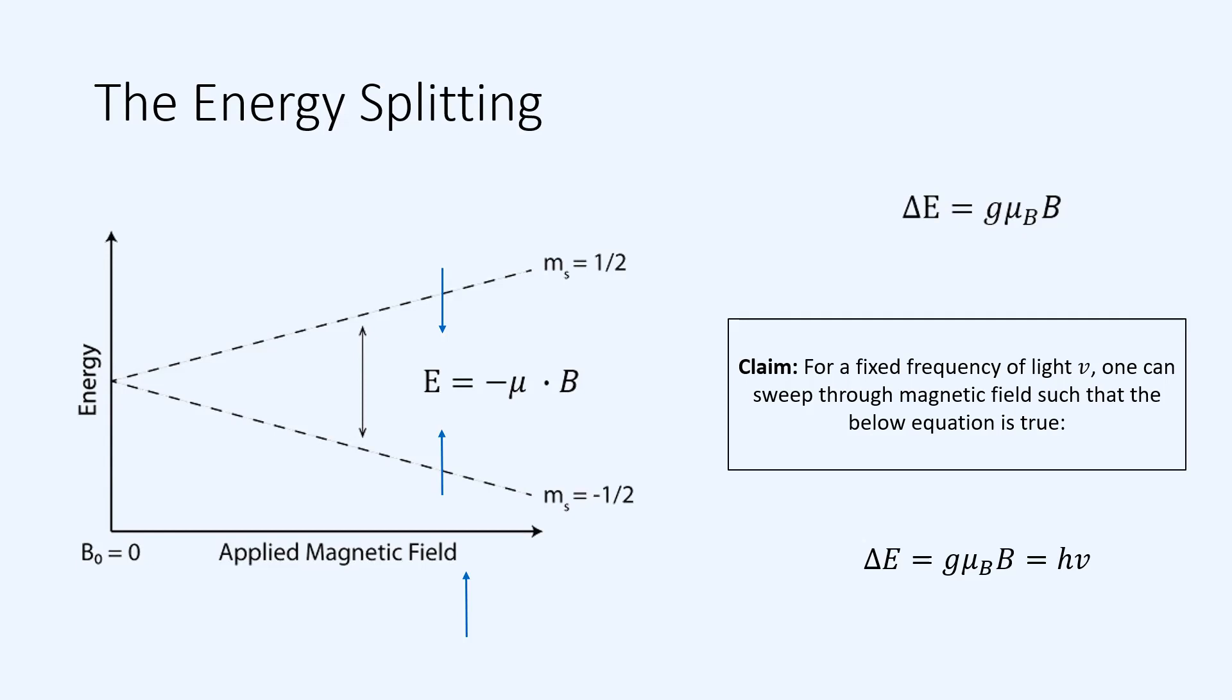The anti-parallel, or down spin, electron becomes less stable. At any magnetic field greater than zero, I can claim that there is an energy difference between the up spin and the down spin electron.